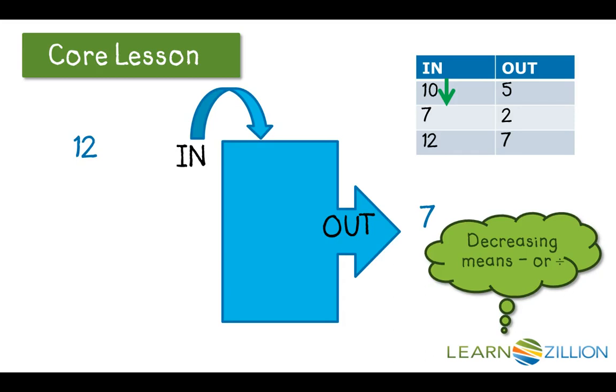Dividing. 10 divided by 2 equals 5. I wonder if it's divided by 2. Let's check the rule. 7 divided by 2. Does that equal 2? No, it doesn't. All right, let's subtract. 10 minus 5 equals 5. 7 minus 5 equals 2. Oh, I think we have it. 12 minus 5 equals 7. So the rule for this in-out pattern is minus 5.